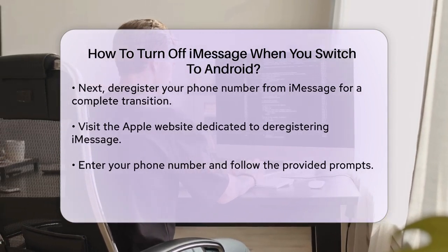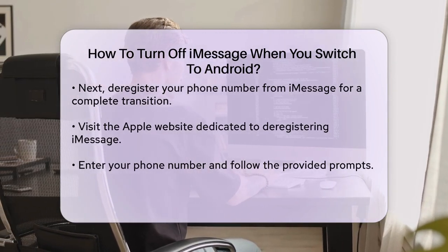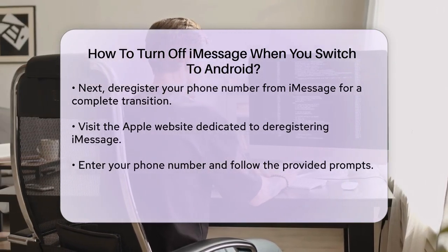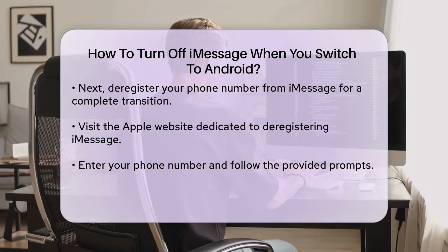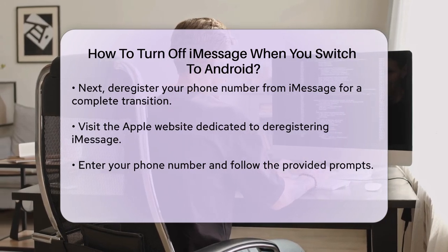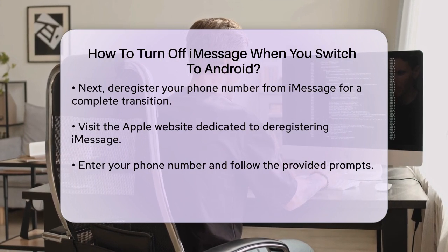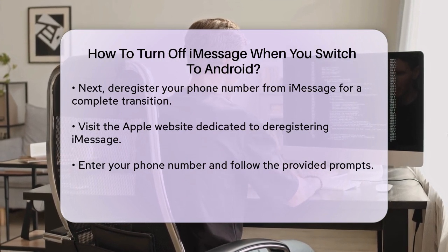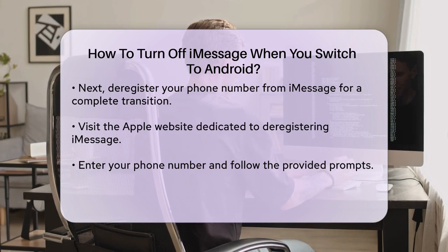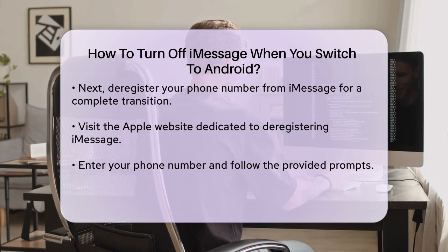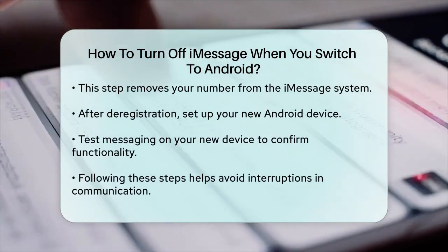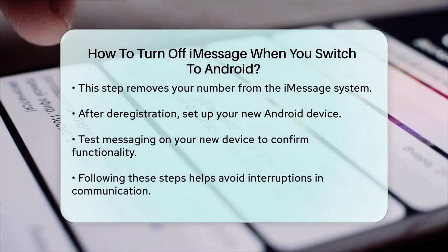Next, it is advisable to deregister your phone number from iMessages. To do this, visit the Apple website dedicated to deregistering iMessages. You will need to enter your phone number and follow the prompts provided. This step ensures that your number is completely removed from the iMessages system, preventing any potential issues with receiving messages on your new Android device.